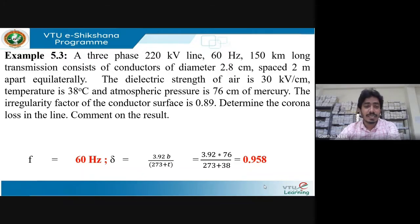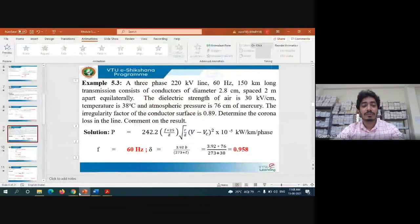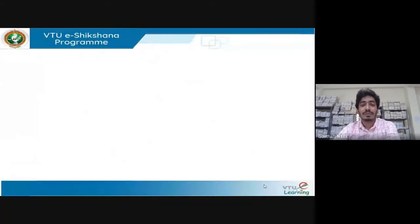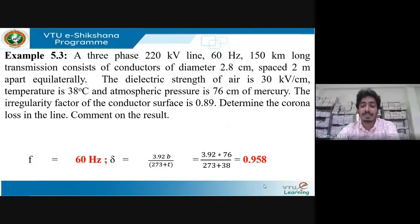Frequency and delta are not directly given, so use pressure and temperature to find delta. The formula is: δ = 3.92b / (273 + t). Substituting pressure b = 76 and temperature t = 38°C gives δ = 0.958.